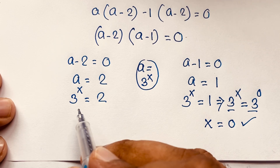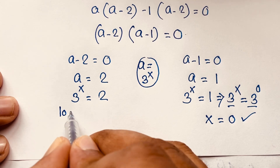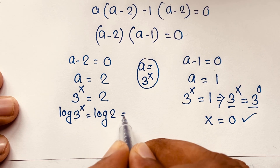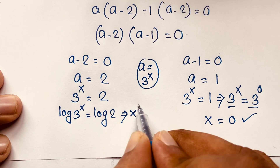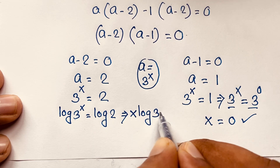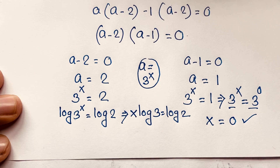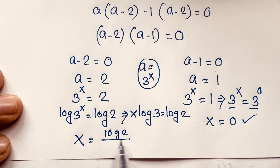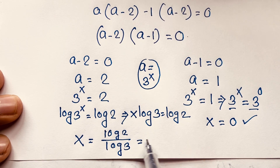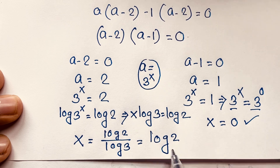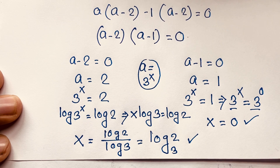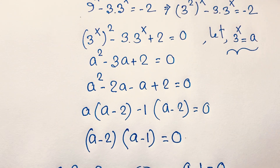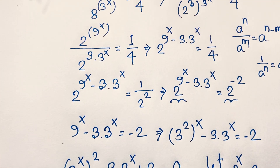For the case 3 to the power x equals 2, we apply natural log to both sides: x times log 3 equals log 2, so x equals log 2 over log 3, which equals log base 3 of 2. This is our second final answer. Thank you all — if you enjoyed this math problem, please subscribe to my channel for other interesting videos. Goodbye, take care everyone!